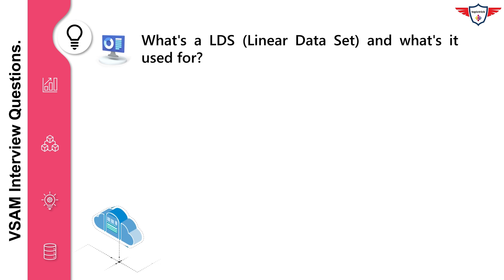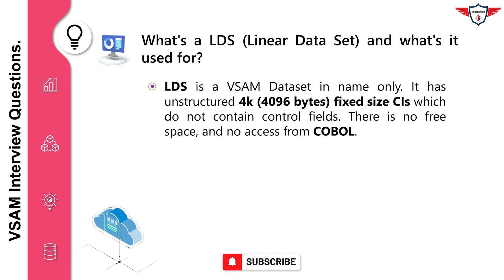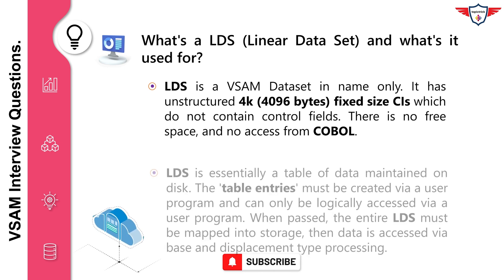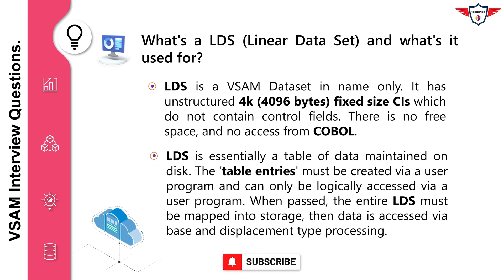What is a Linear Dataset (LDS) and what is it used for? LDS is a VSAM dataset in name only. It has unstructured fixed-size CIs (4096 bytes) which do not contain control fields. There is no free space and no access from COBOL. LDS is essentially a table of data maintained on disk. The table entries must be created via a user program and can only be logically accessed via a user program. When accessed, the entire LDS must be mapped into storage, then data is accessed via base and displacement type processing.